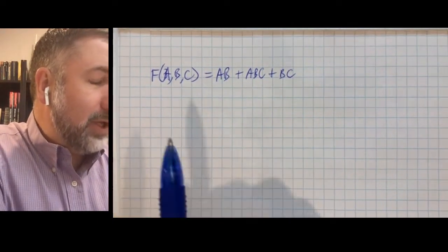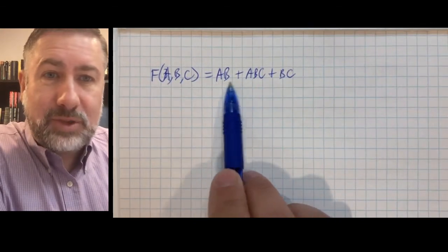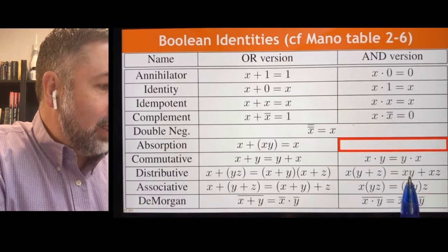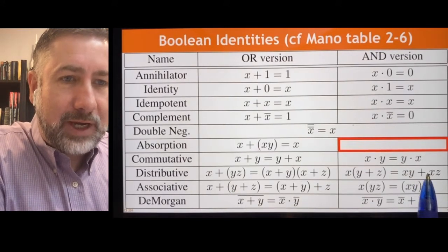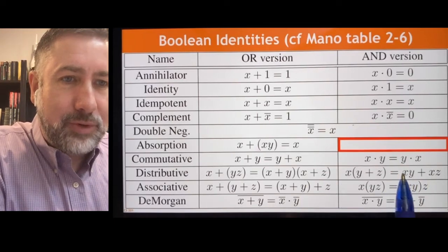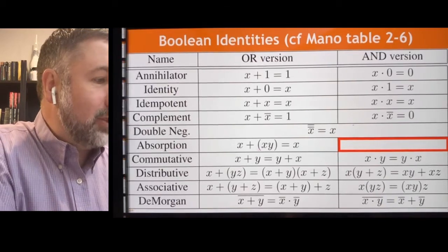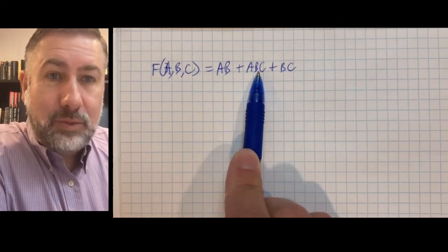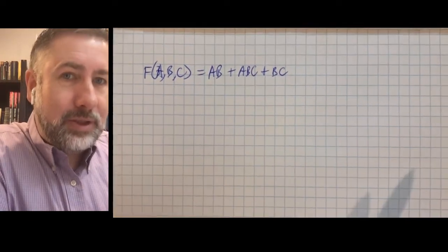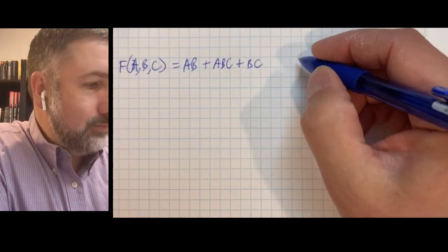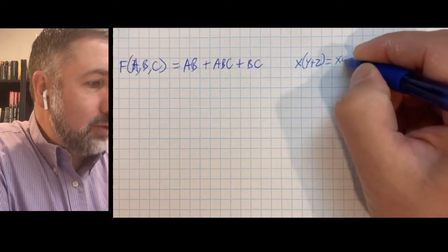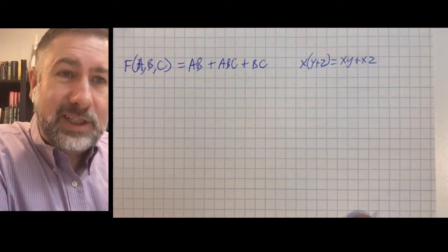So what we're going to do is simplify this. Now we can look at these first two terms, and we can say there's something common between these terms, and we have this distribution rule. I'll bring in my rules again so you can remember what these rules are. We have this distributive rule that says that if we have two terms that look like this, and there is a common factor between them, we can factor that out and bring that out into the brackets.